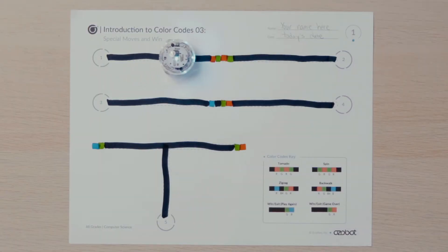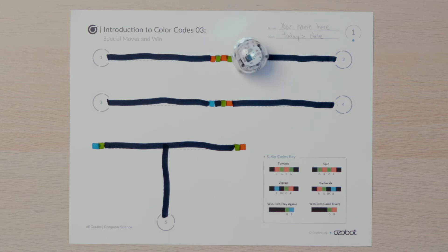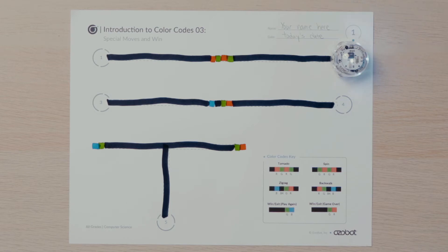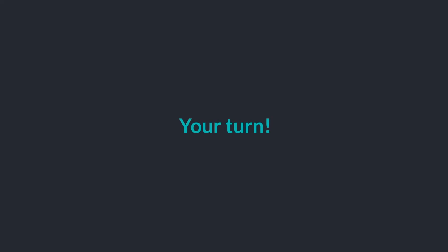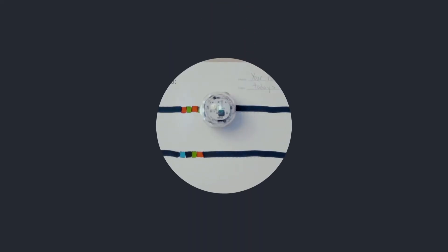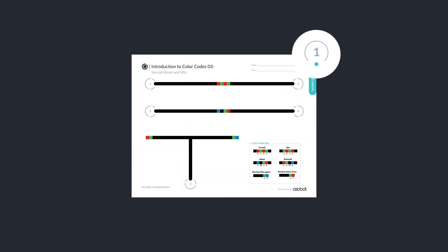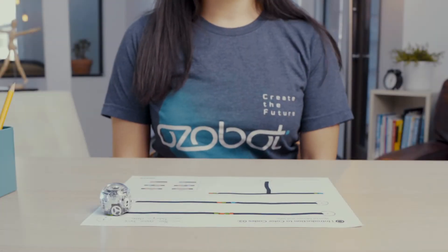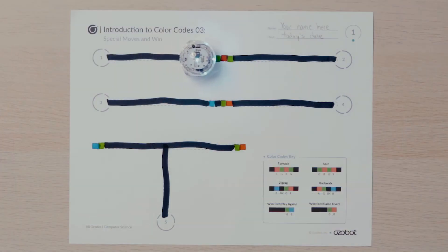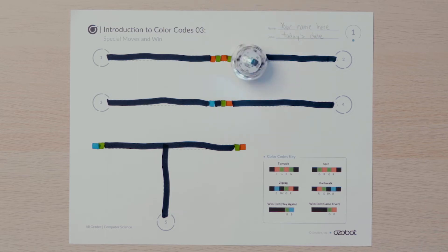Use the color codes key and your color code markers to complete each pathway: put the tornado color code on the first path, the zigzag color code on the second path, and the win-exit color codes on the ends of the third path. After your activity sheet is complete, you are ready for your bot. Put your bot on start number one and observe how it uses the line sensor to follow the pathway and its color sensor to process the tornado color code. When you programmed your bot using the tornado color code, it should have spun around. Did you also notice it changed speed as it spun? It begins to spin slowly and then gets faster.